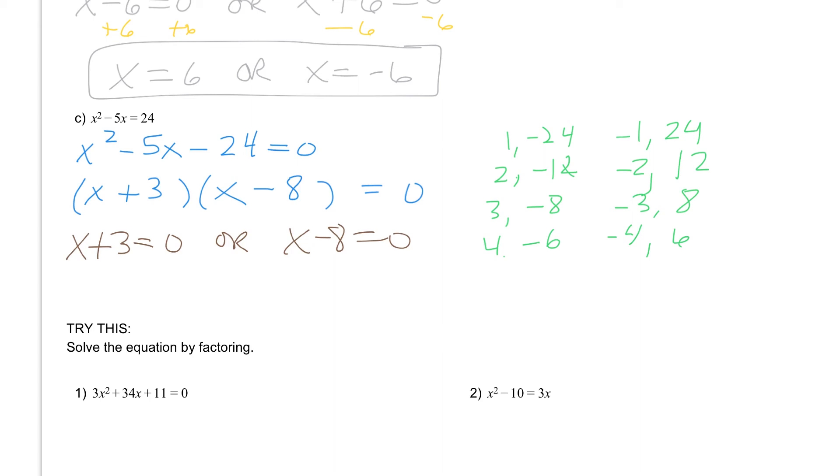Here we would subtract 3 from both sides and we would get x equal to negative 3. In this one we would add 8 to both sides and we get x equal to 8.